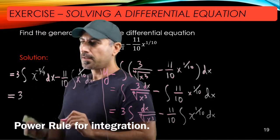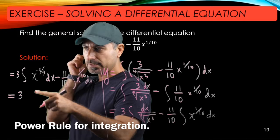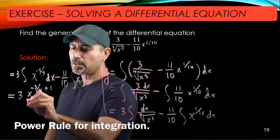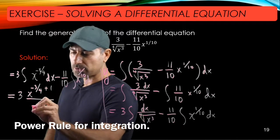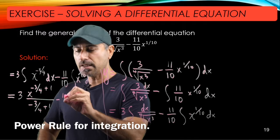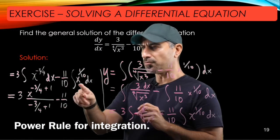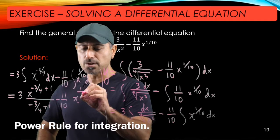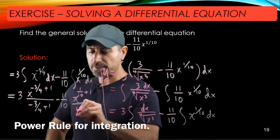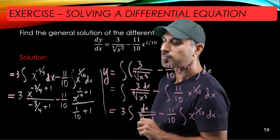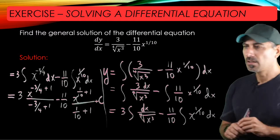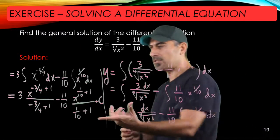We add 1 to the exponent and divide by the new exponent. For the first term: x to the power of negative 3/4 plus 1, divided by that new exponent. Minus 11/10, and we apply the same rule for the second function: x to the power of 1/10 plus 1, divided by the new exponent 1/10 plus 1. We don't forget to add an arbitrary constant C.